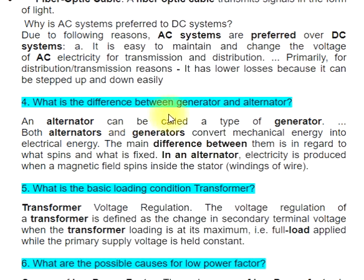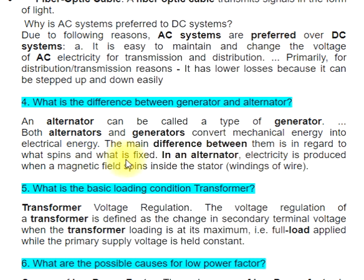Question 5: What is the difference between a generator and an alternator? An alternator can be called a type of generator. Both alternators and generators convert mechanical energy into electrical energy. The main difference is in regard to what spins and what is fixed. In an alternator, electricity is produced when a magnetic field spins inside the stator windings of wire.